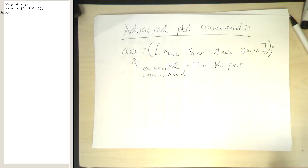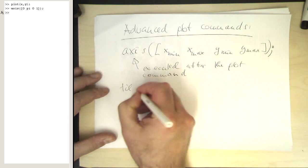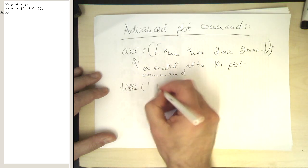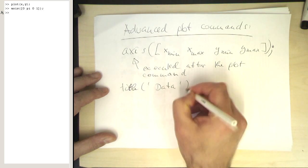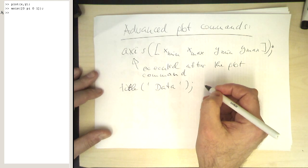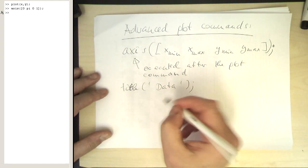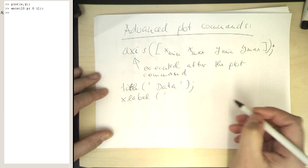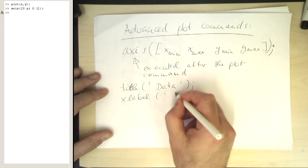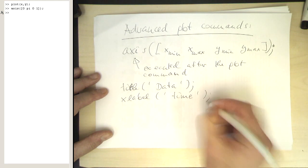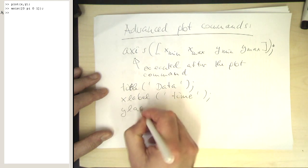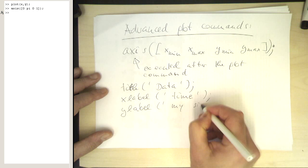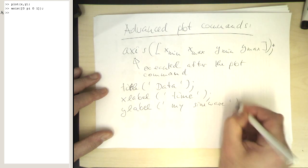So what we also can do is for example give the plot a title. And then let's say this here is just data which doesn't make much sense but just to show you it's possible to give this plot a title. And then we can also for example give the x axis a label, let's use this here time, and y label let's call this just my sine wave.